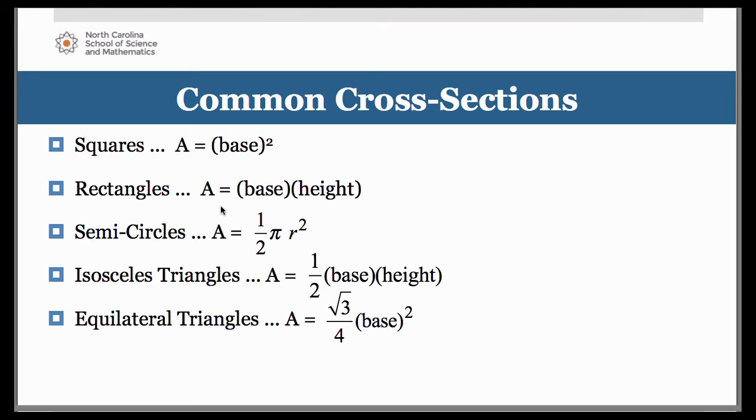Semi circles. One half pi r squared of course is the formula. The big thing you need to remember is the radius calculation. The length of your representative rectangle is the diameter of the semicircle, so you need to cut that in half first before squaring it.